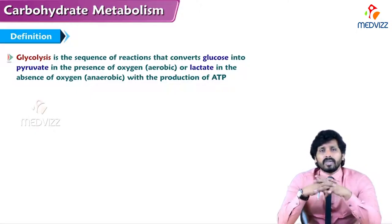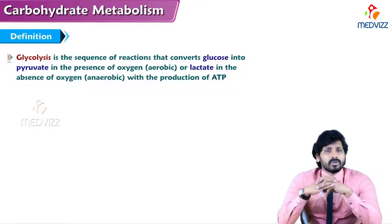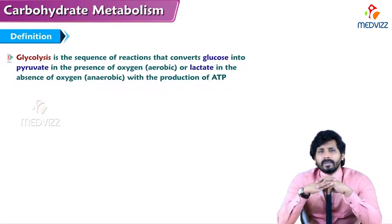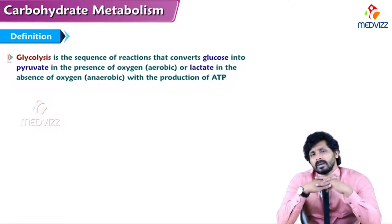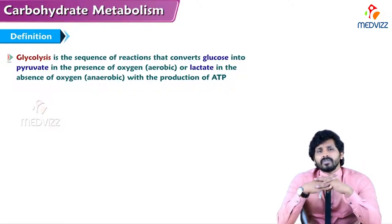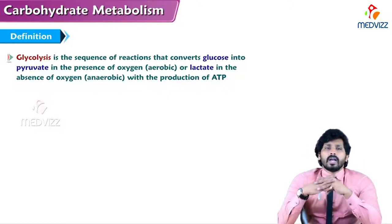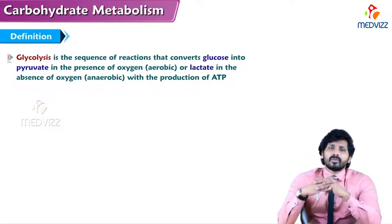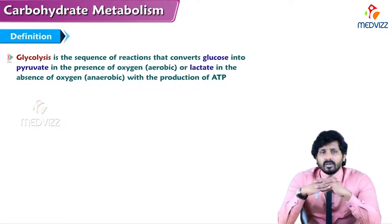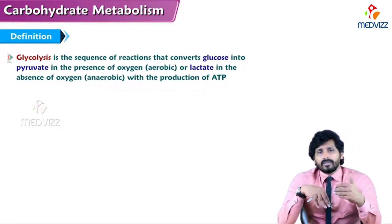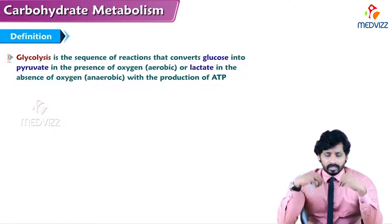Both pathways produce ATPs, but the quantity differs. The number of ATPs produced in aerobic glycolysis is different from anaerobic glycolysis. This will be discussed separately in another video on the energetics of glycolysis.